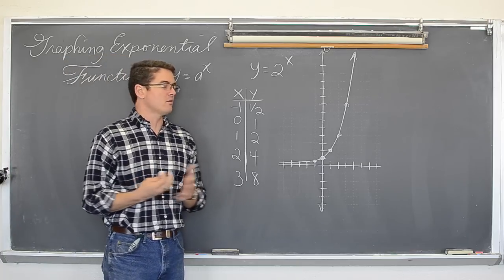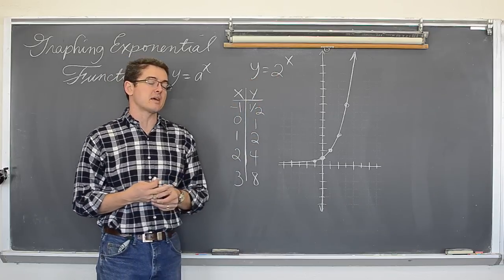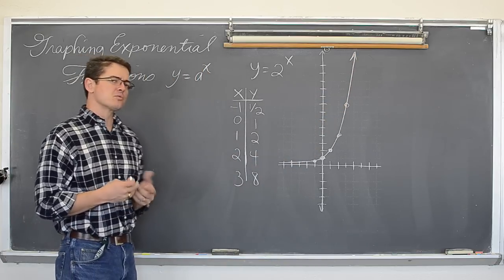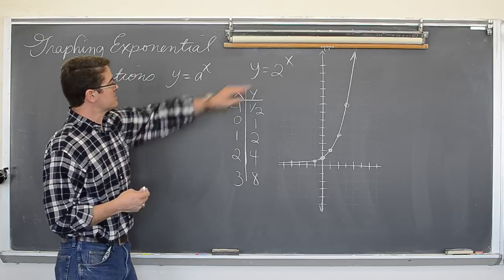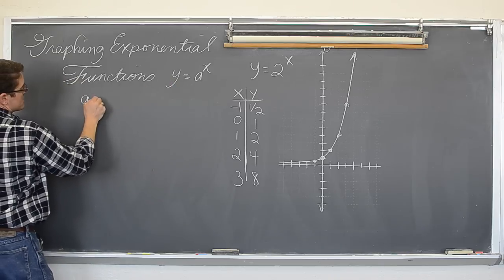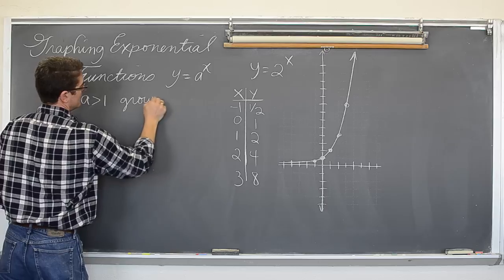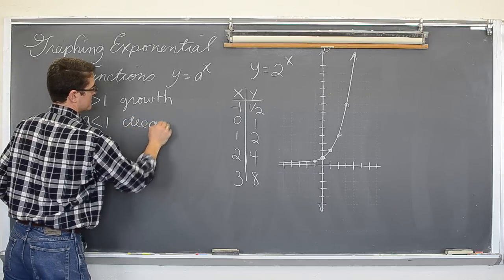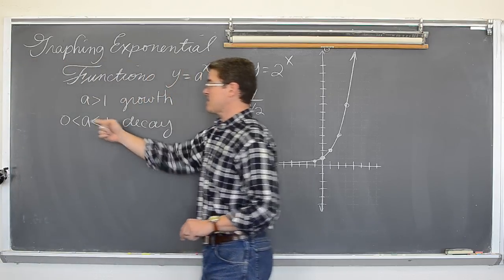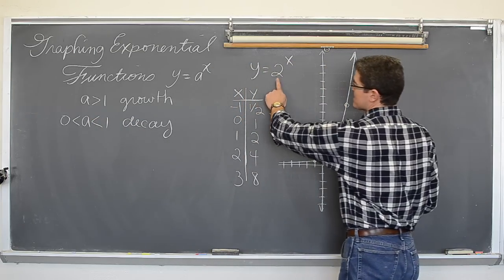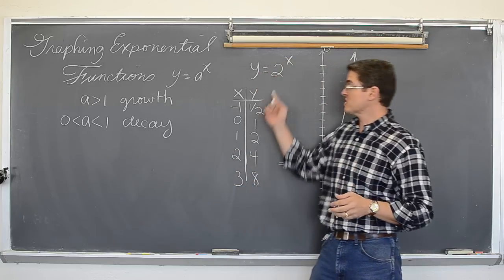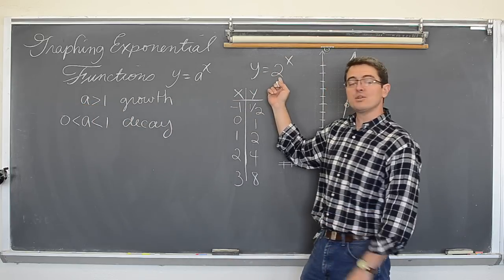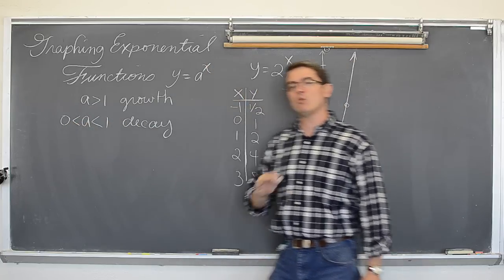We are going to call that our parent function, y equals 2 to the x — about as easy a base as I can make. So is that exponential growth or exponential decay? When a is greater than one, it is going to be growth. When a is greater than zero and less than one, it is going to be decay. You cannot have a negative base with exponential functions, so if your base is greater than one, that is growth; if your base is between zero and one, that is decay, and that graph will come down to the right.